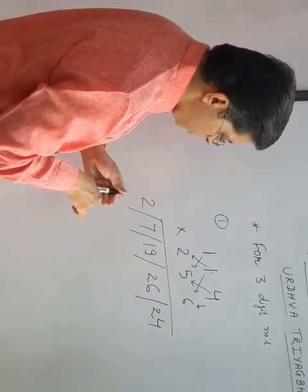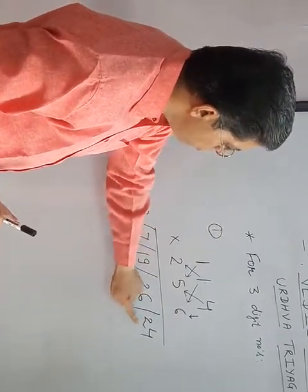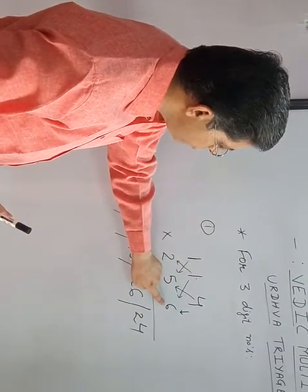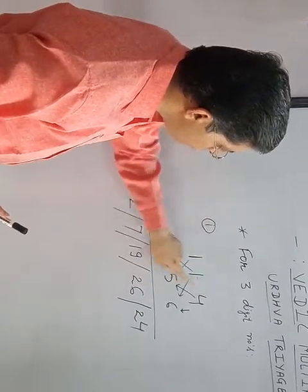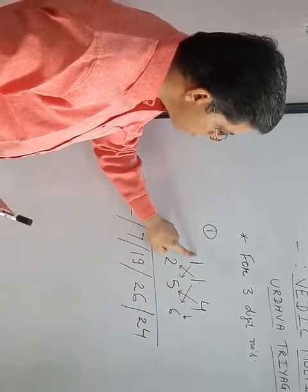I am explaining again, see here. 6 into 4 is 24. Then take cross multiplication. 1 into 6 is 6, 5 into 4 is 20. This will become 26.